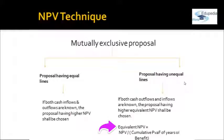To compute the equivalent NPV, you divide the net present value by the cumulative present value factor (PVF). If the project is three years, you divide by the sum of PVFs for years one to three. If it is six years, you sum the PVFs for years one to six. Whichever equivalent NPV is higher, that proposal will be accepted.